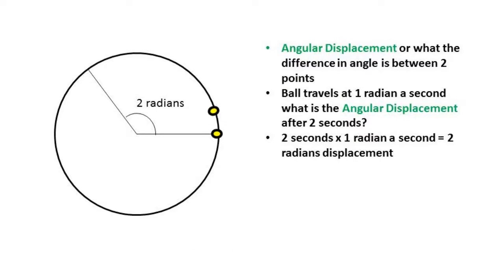The next term we will be discussing is angular displacement. This is the angular difference between two points along the circular path. For example, if a ball is going around a circle at one radian a second, after two seconds the angular displacement from initial position will be two radians.